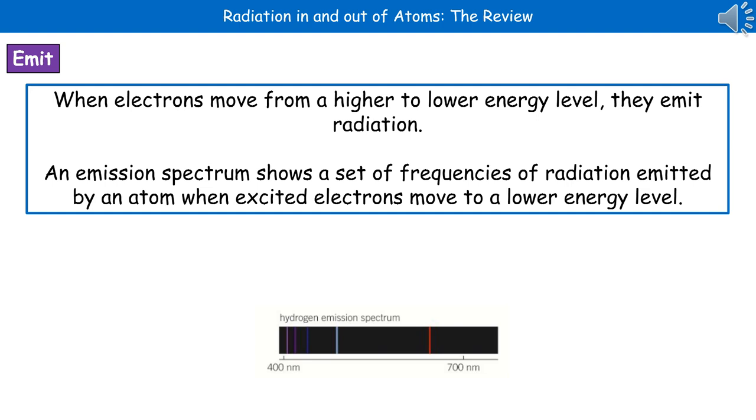We've looked at what happens when electromagnetic radiation is absorbed by atoms, but atoms also emit radiation. When electrons move from a higher to a lower energy level, they will emit radiation. We can produce an emission spectrum to show the set of frequencies of radiation emitted by an atom as those excited electrons move from their higher energy level to the lower energy level. I've given you the example of hydrogen at the bottom there.